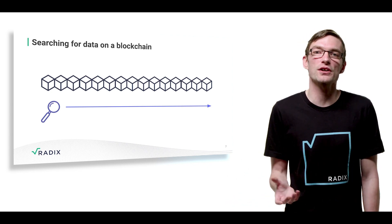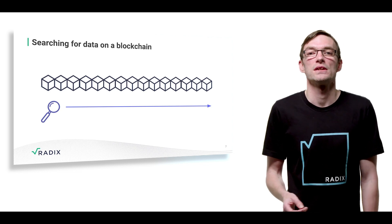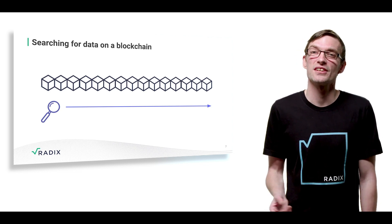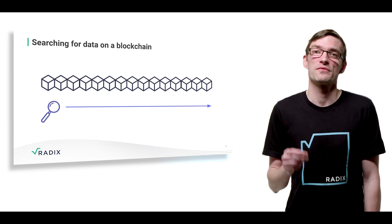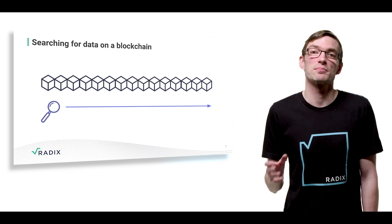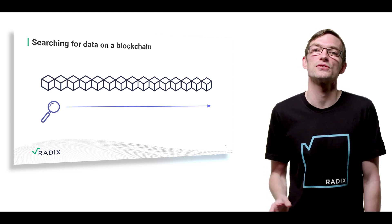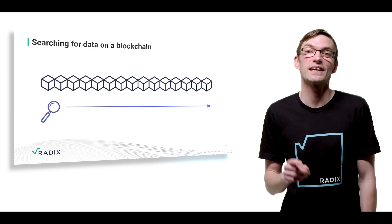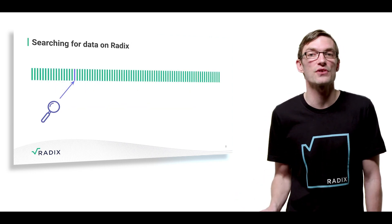Which block a transaction is contained within is effectively random. To find the transaction history of a single address, you therefore need to search the entire blockchain for relevant transactions. Bitcoin has a blockchain of over 400 million transactions, all of which would need to be inspected in order to collect every transaction of a single address.